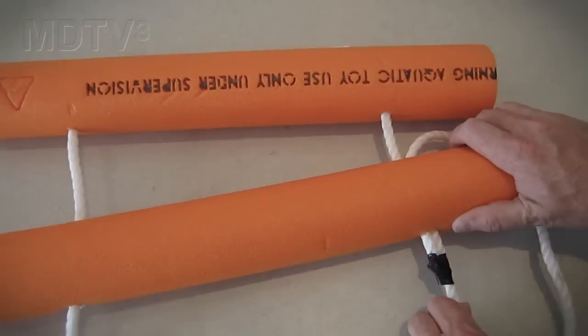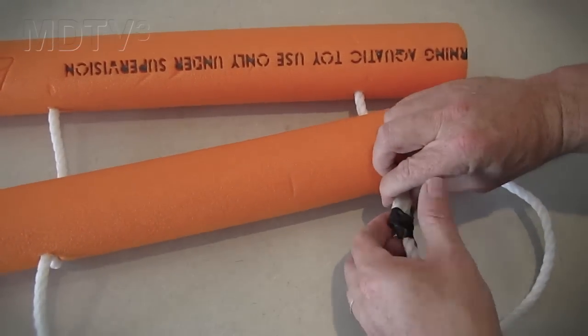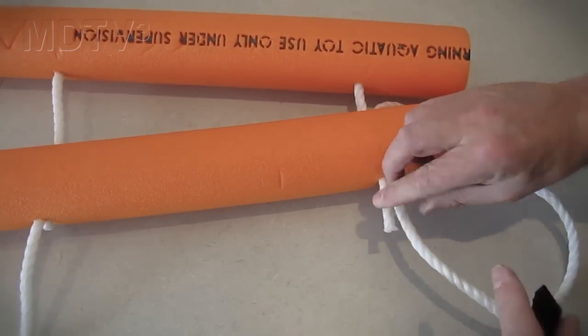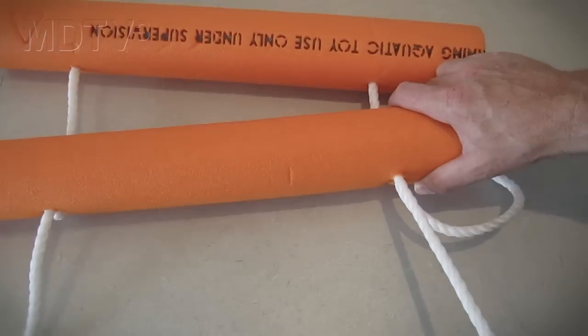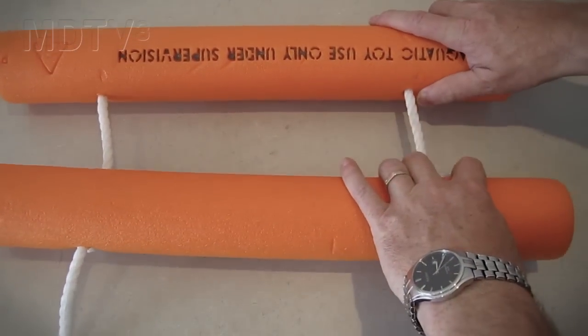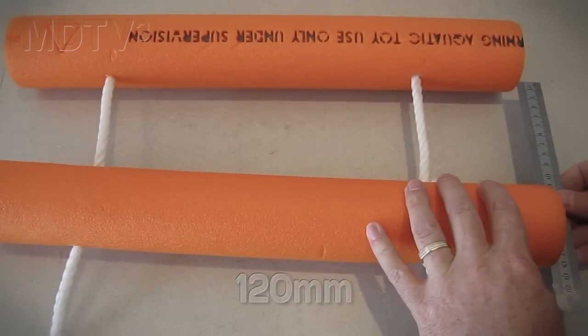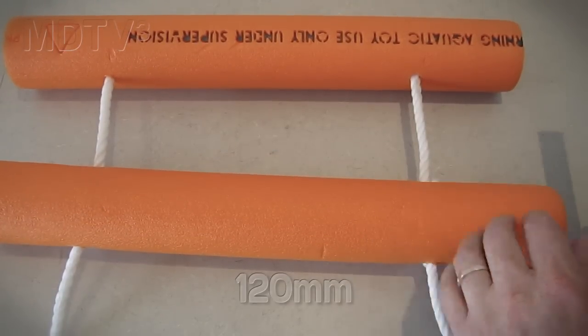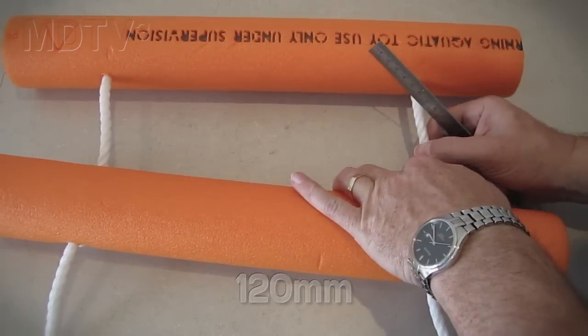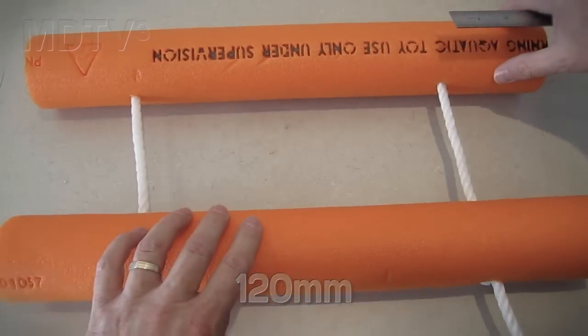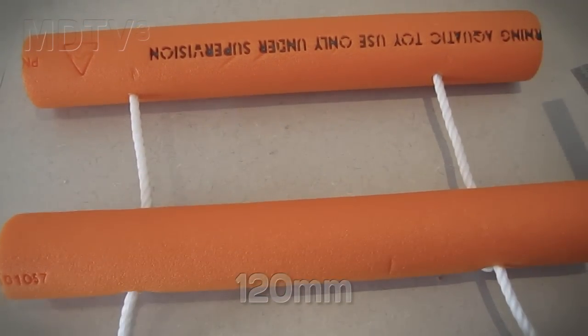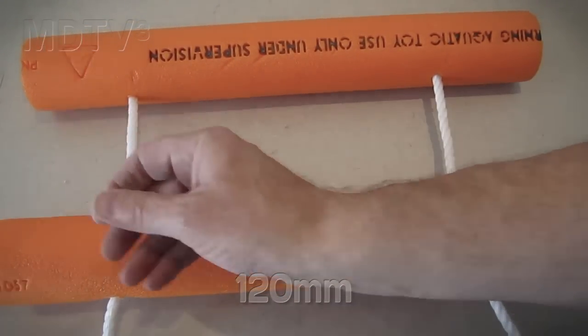Pull the end of the rope through the hole and untie the tape. Pull the remainder of the rope through the hole. Position the pool noodles so that they are approximately 120 millimeters apart. Recheck both sides to ensure that they are even.